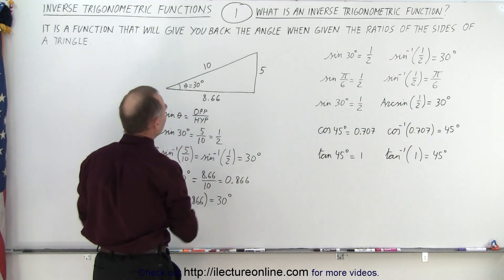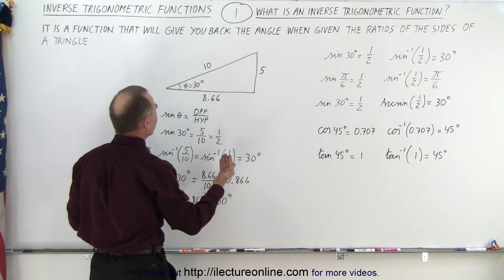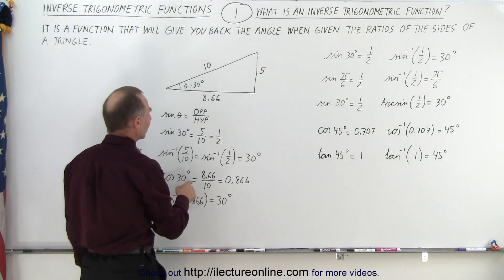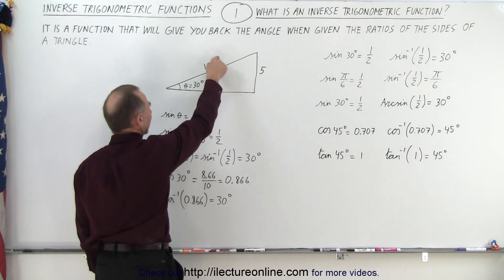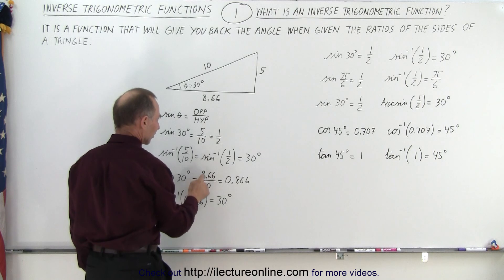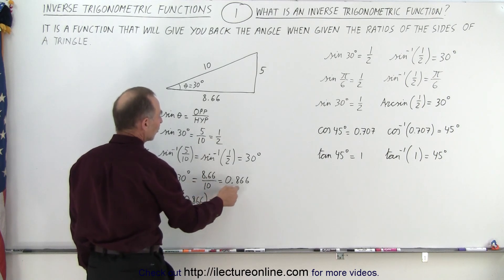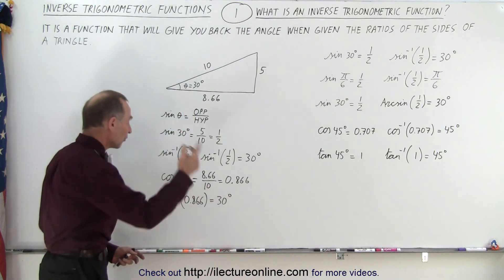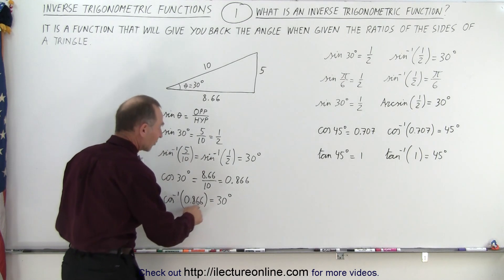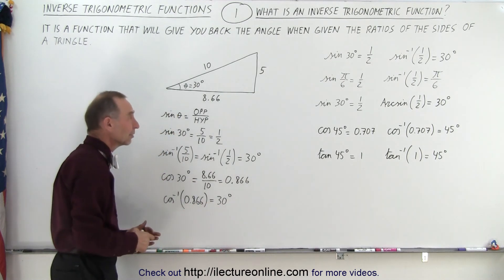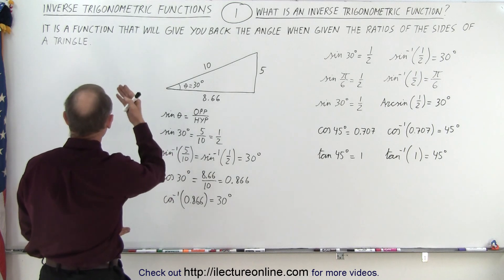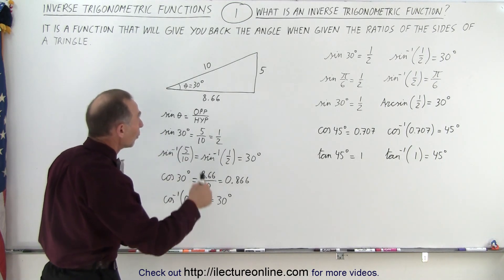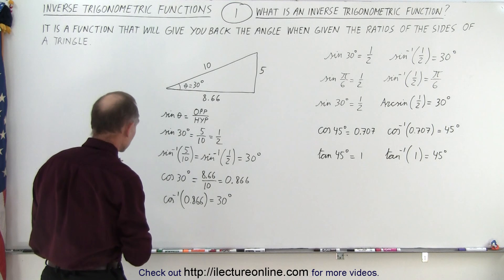Looking at the triangle, you can see that the cosine of 30 degrees is equal to the adjacent side divided by the hypotenuse, which is 8.66 divided by 10, giving 0.866. Then if we take the inverse cosine of 0.866, we get back the angle of 30 degrees. So the definition is: it is a function that gives you back the angle when given the ratios of the sides of a triangle.